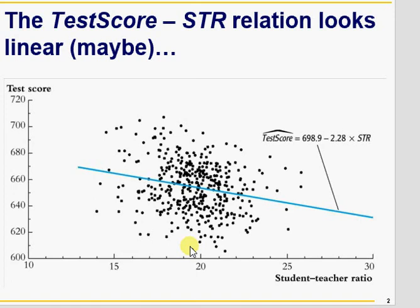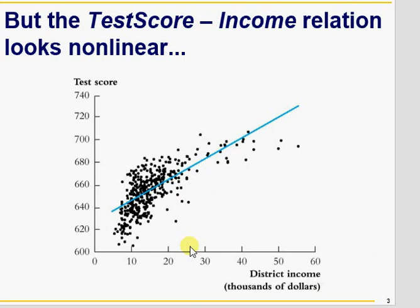There seems to be a linear relationship between X and Y — class size and test score — but the linear model does not seem a good fit here. The model seems to follow a nonlinear pattern instead. So what's the difference between linear and nonlinear?